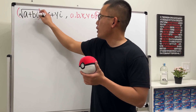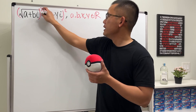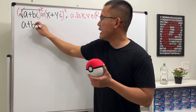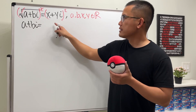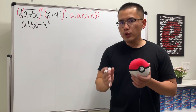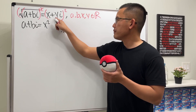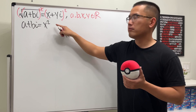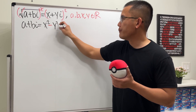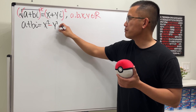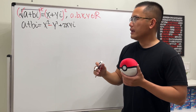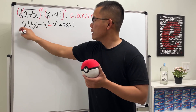We square both sides so the square roots cancel, leaving a + bi on the left. On the right, expanding (x + yi)² gives x² as the real part, then minus y² because i² = -1, and the imaginary part is +2xyi.